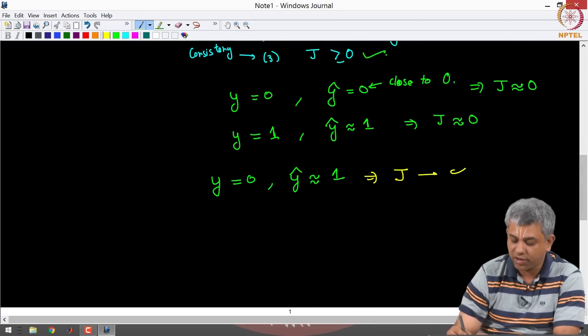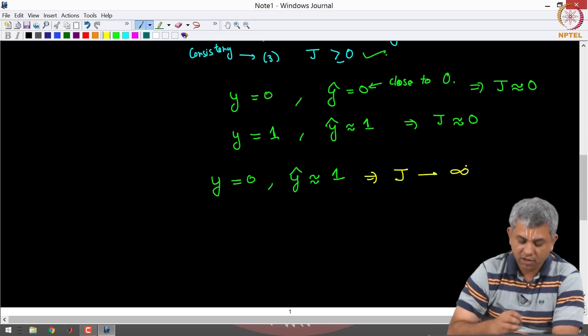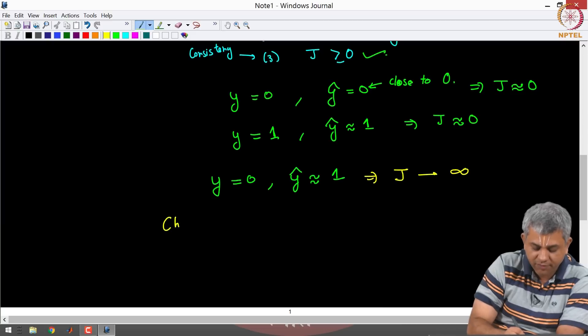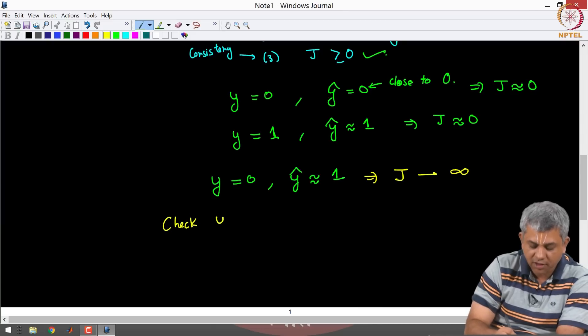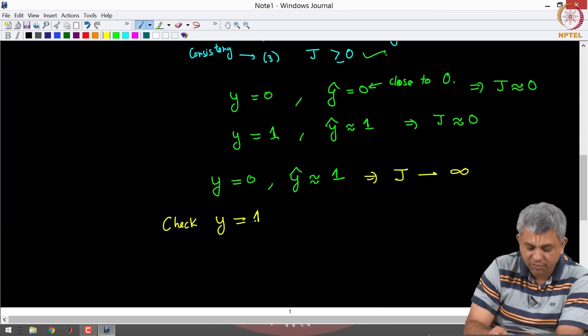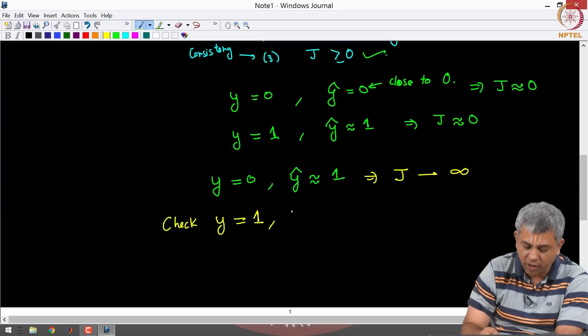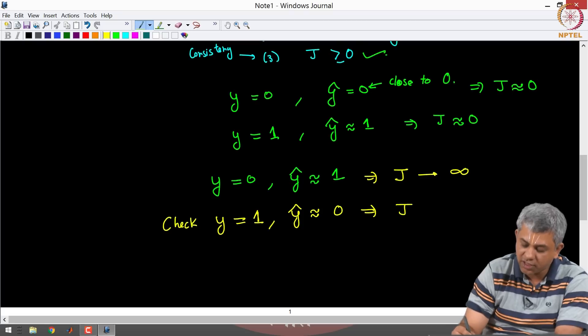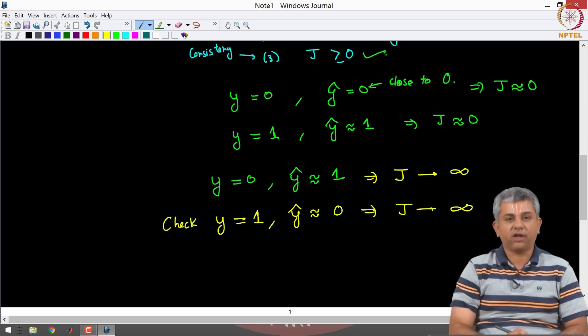J tends to infinity as Y hat tends to 1. Also you can check as an exercise that if Y is 1 and if Y hat is approximately 0, J will again tend to infinity.